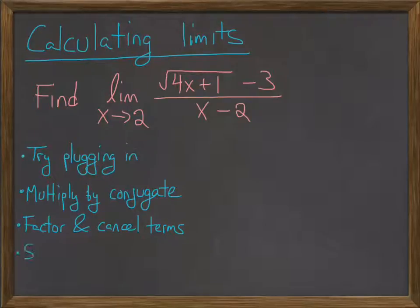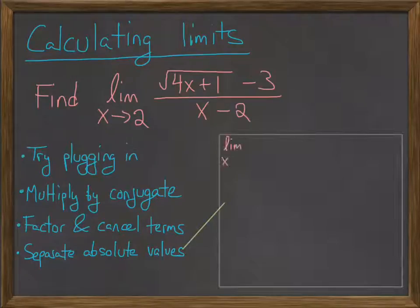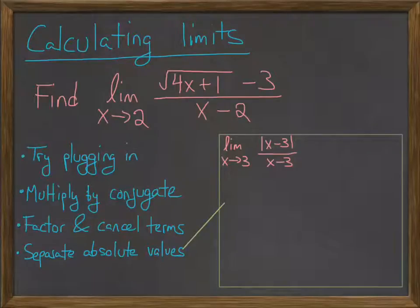One thing to remember is how to deal with absolute values. Let's just break this out over here. If we have some problem like limit as x goes to 3 of absolute value of x minus 3 over x minus 3, what you need to do is break that into two parts.